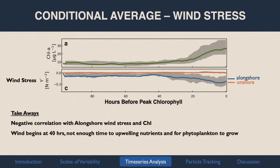Starting to look at conditional states of physical drivers: chlorophyll is at the top, with the peak at zero hours. The alongshore wind stress in the blue trace shows two takeaways: there's a negative correlation, so as we see ramping up of alongshore wind stress toward the equator or southward, we also see a ramping up of chlorophyll. But the timescales are slightly different — wind seems to start at about 40 hours, whereas chlorophyll really ramps up at around 20 hours.